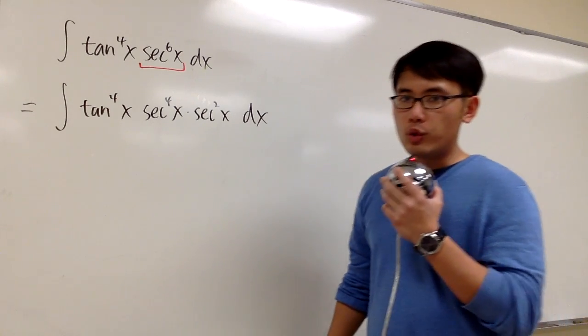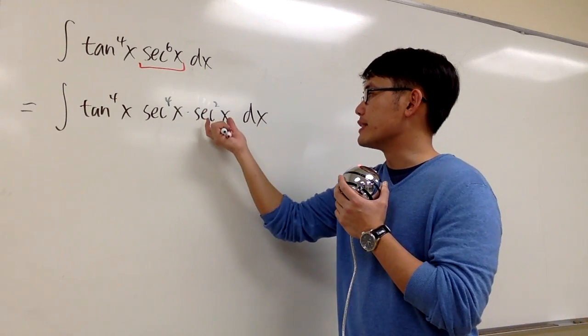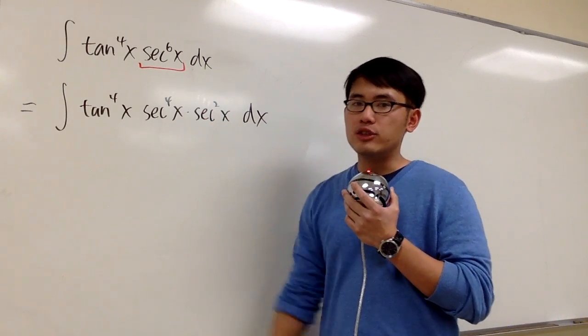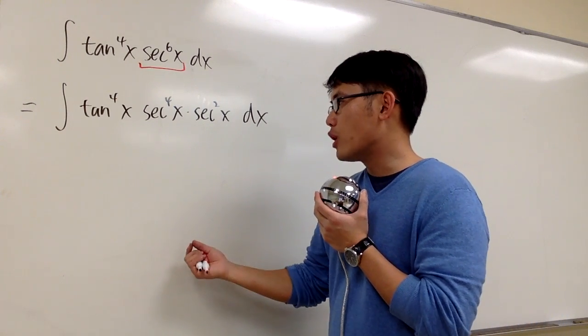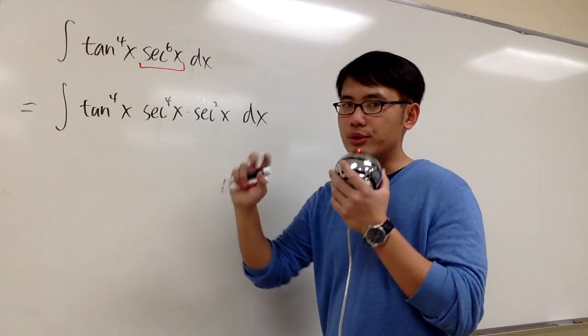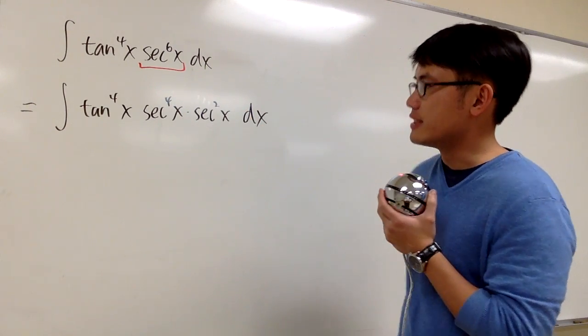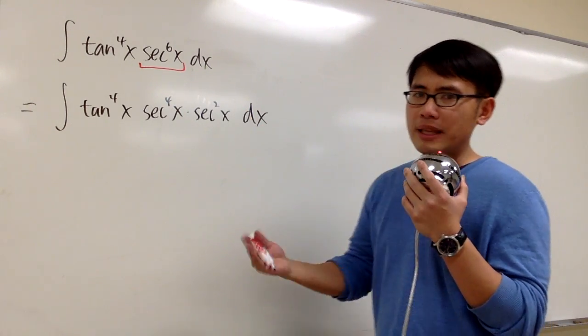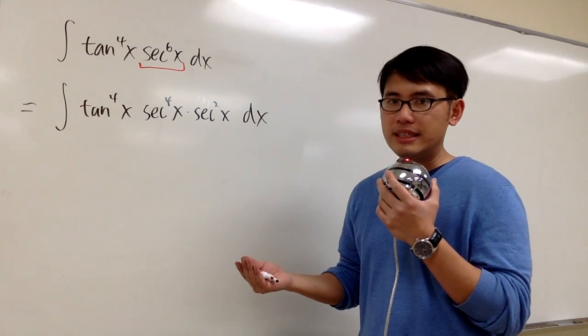Again, we can do this when we can squeeze out secant squared and also there's a tangent involved. My ultimate goal is that u is equal to tangent, and then the substitution will cancel out the secant squared. But then I don't want to have too many secants to be dealing with.